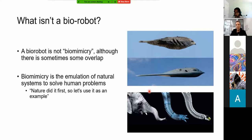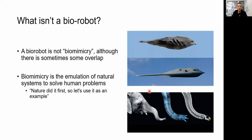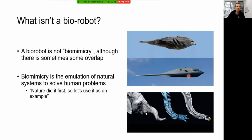A bio robot also isn't the same as biomimicry. Biomimicry is where we emulate natural systems to solve human problems — for example, using avians to understand aerodynamics, or understanding how an elephant articulates its trunk to create a robot that can more efficiently move in many degrees of freedom. The idea with biomimicry is that nature did this first, so let's use it as an example. There are bio robots that are biomimics, but these two things aren't necessarily the same — there are no biological materials in the stealth bomber, for instance.